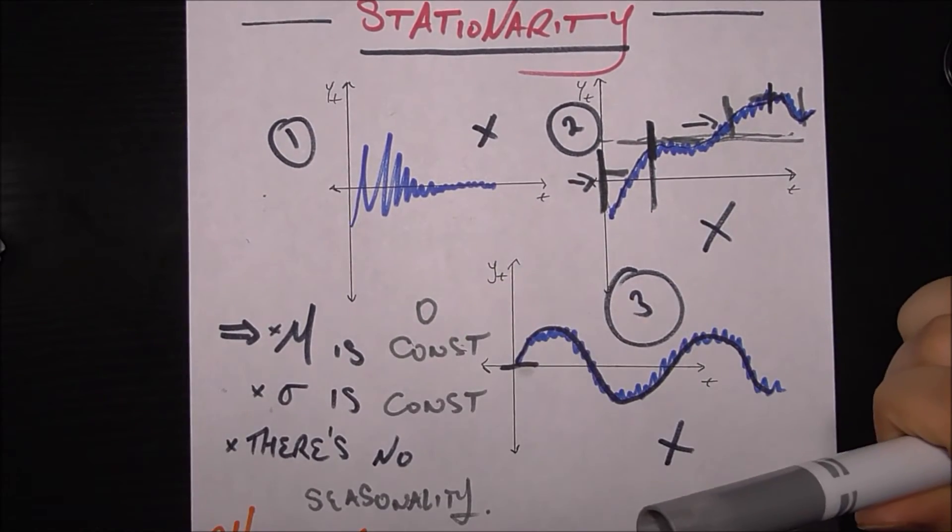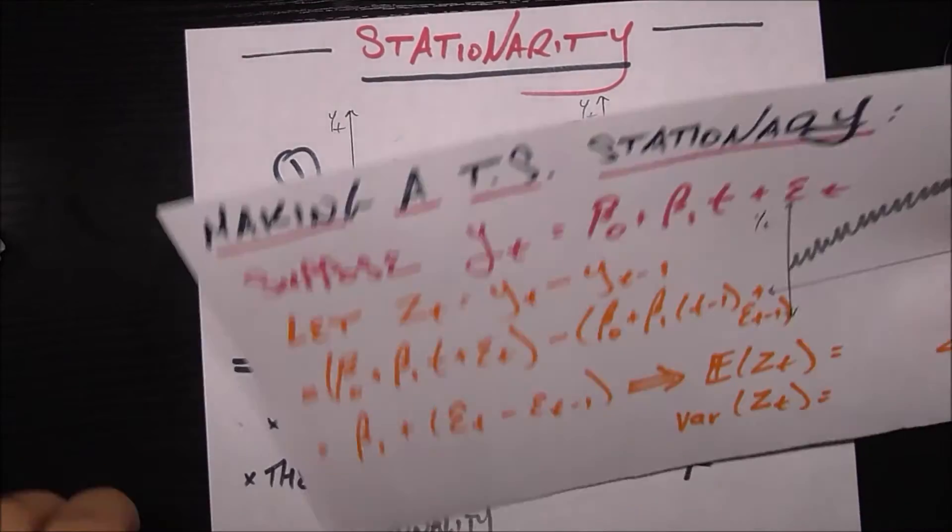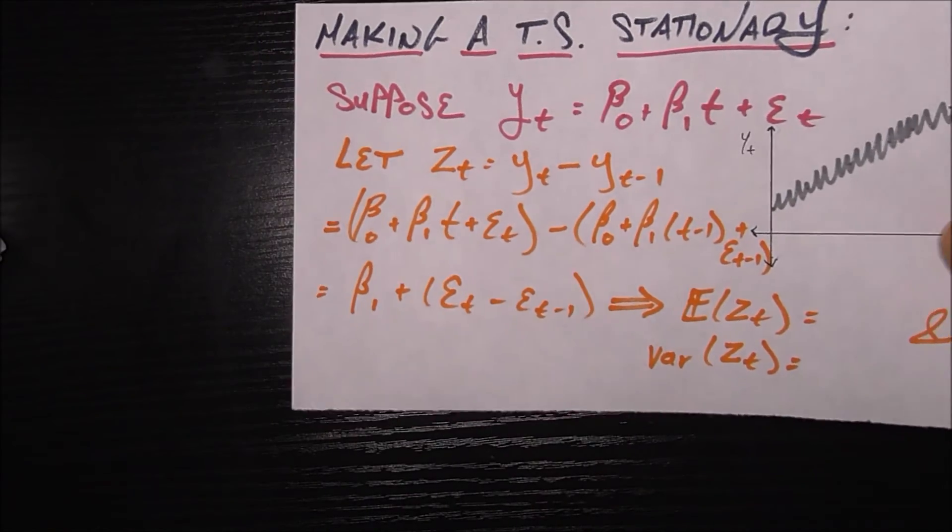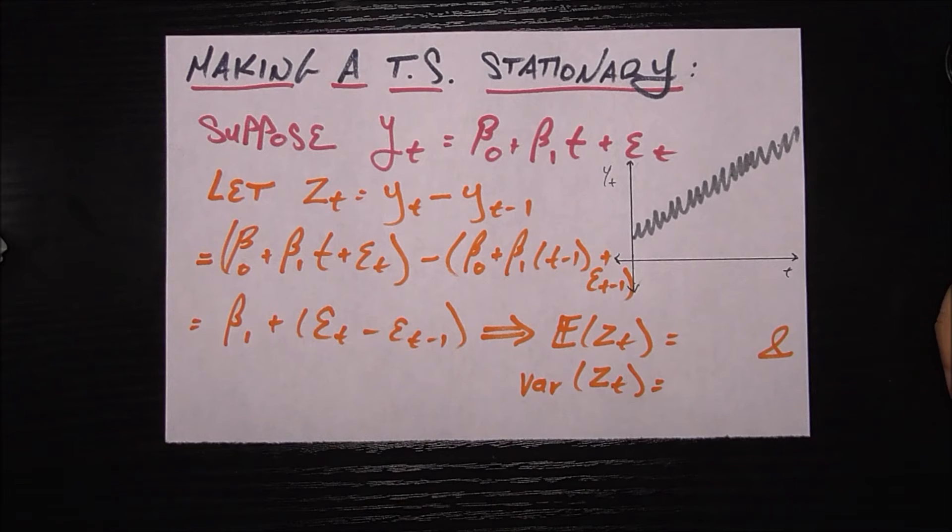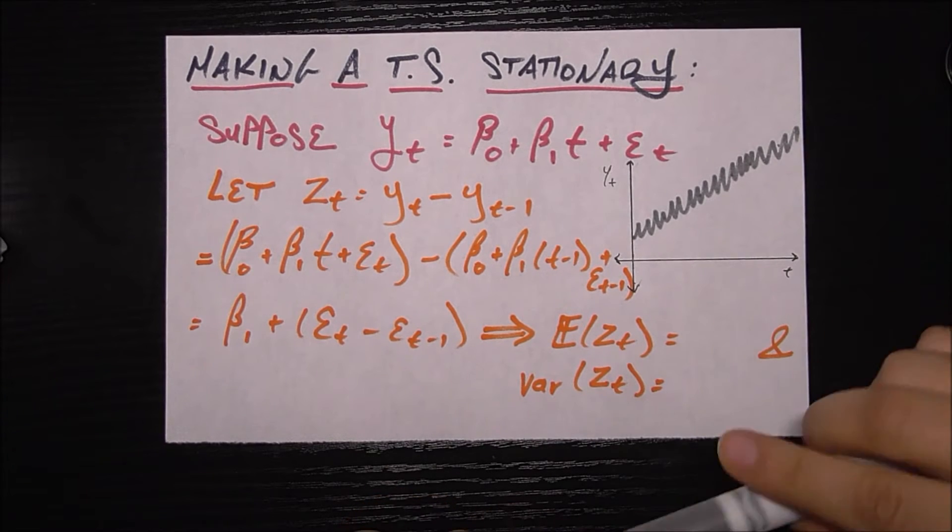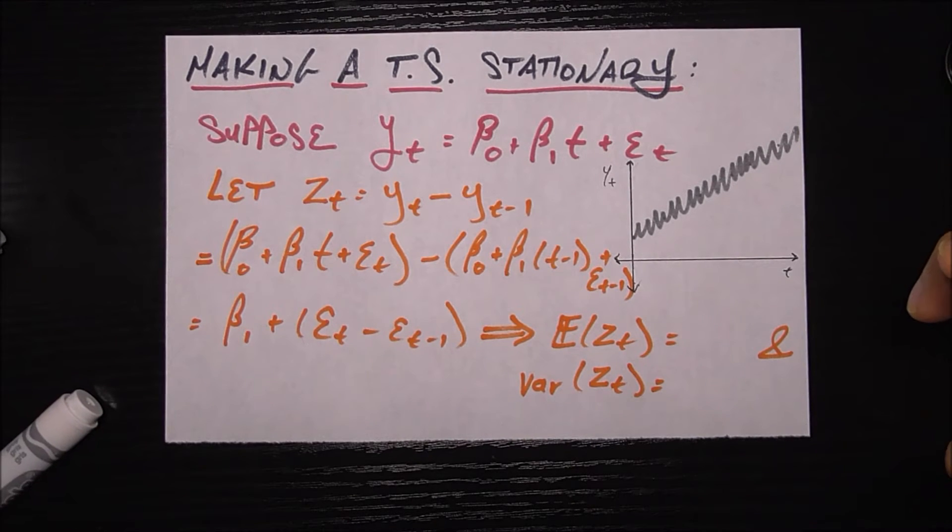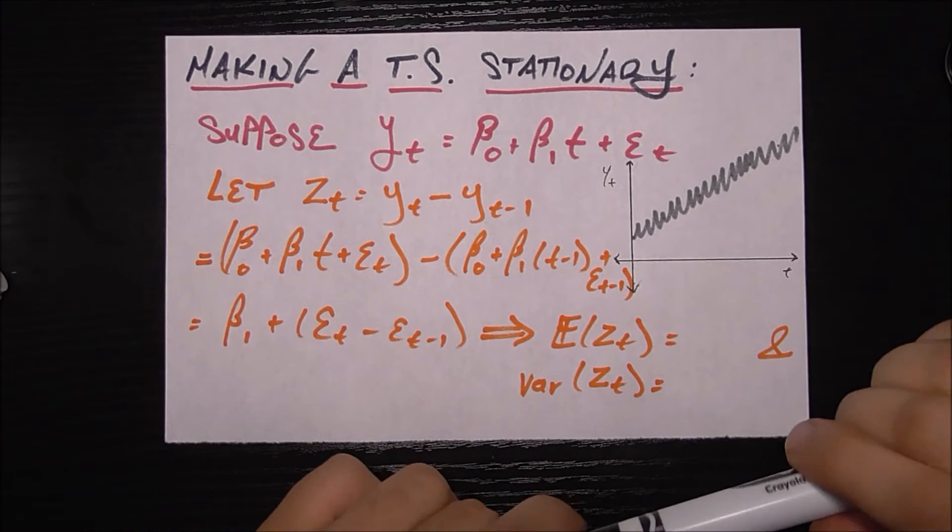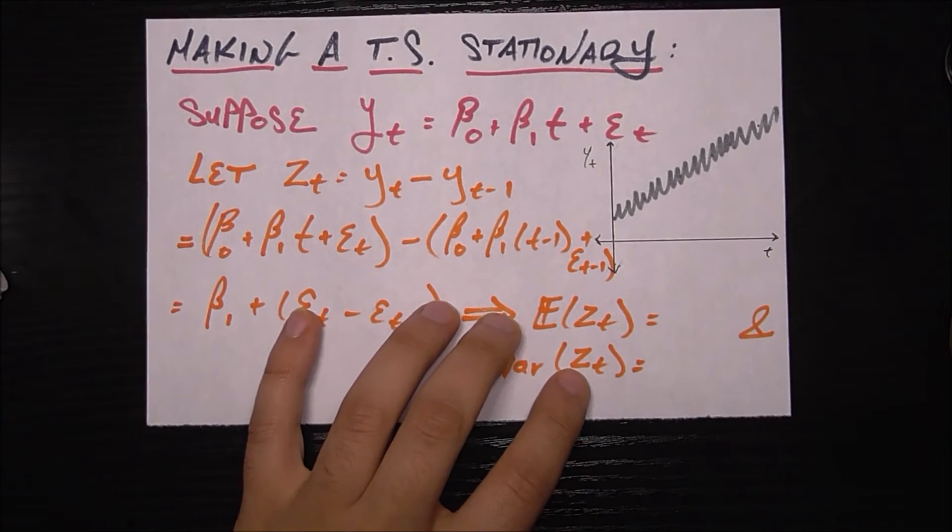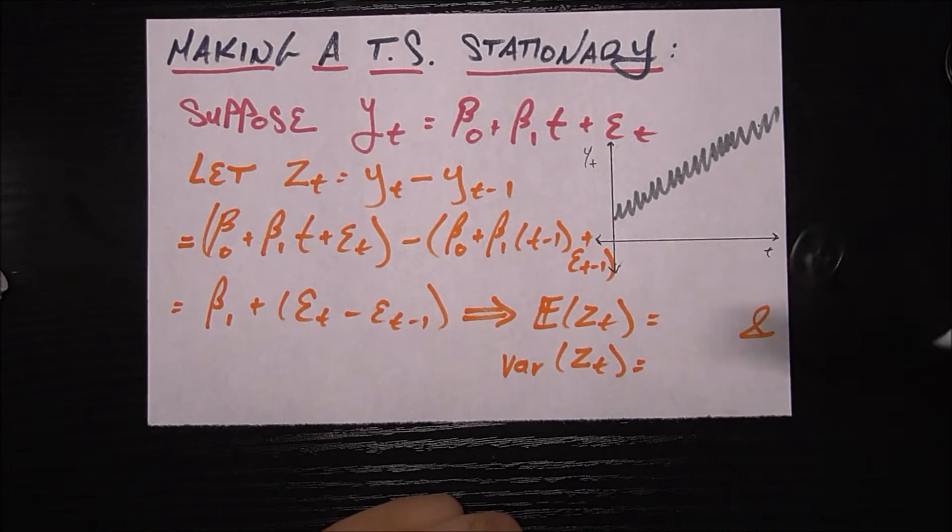Now of course the last part of this video will be, let's say you run into a time series in the wild that is clearly not stationary—it violates one or more of the conditions above. Can you do something to make your time series stationary? Let's look at one specific case and look at tips you can do in general.